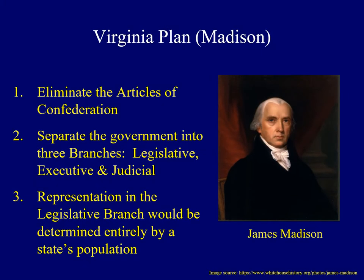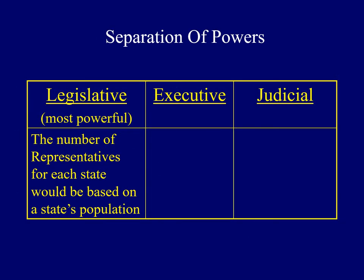The third provision caused a major problem, as Madison proposed that representation for each state in the national legislature should be determined entirely by a state's population. Delegates from the large states thought the ideas in the Virginia Plan were great, as this would allow them to have more power and influence. However, delegates from the small states were upset — they would stand to lose power under this proposed system, and some even threatened to leave the convention itself.